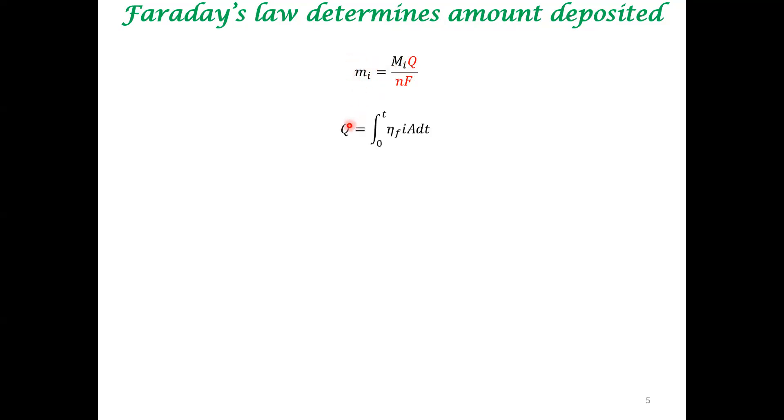The amount of charge can be obtained from current. This is efficiency of deposition. This is fairly elementary application of Faraday's law. From all these things, if you know the density of the material that is being deposited, this is the area involved, you can get to the thickness of the electrodeposit. These are all fairly routine application of Faraday's law.